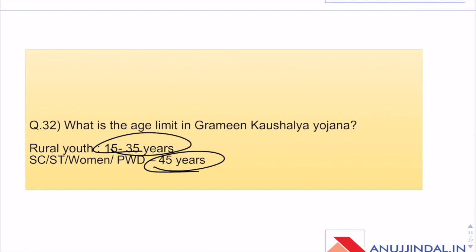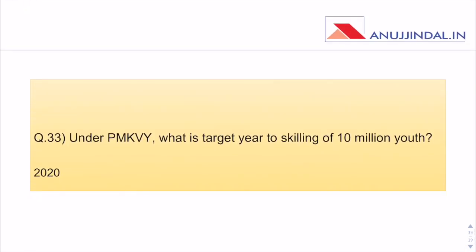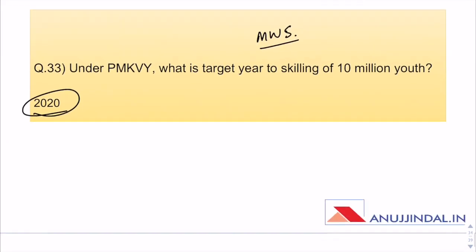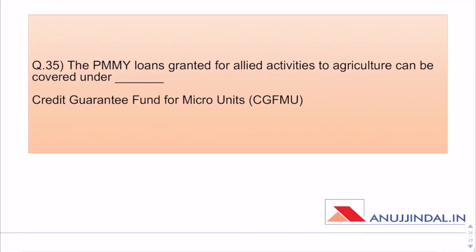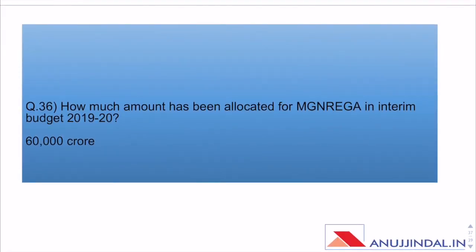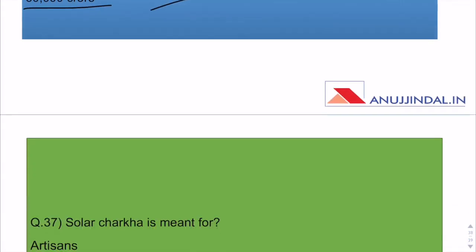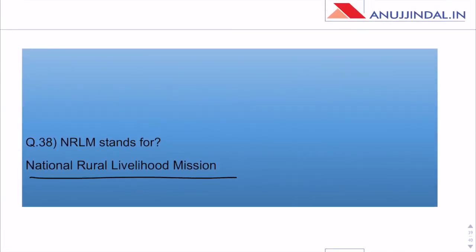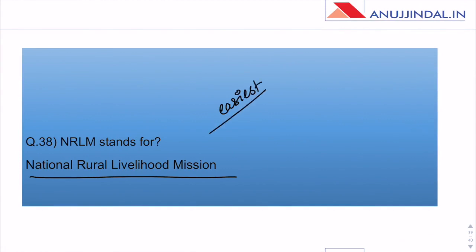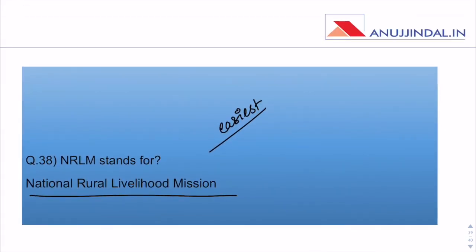What is the age limit in Pradhan Mantri Grameen Kaushalya Yojana? 15 to 35 and 45 — covered. PM KVY target year for skilling 10 million youth: 2020. KVY comes under the Ministry of Skill Development and Entrepreneurship. Mudra Yojana loans granted for allied activities to agriculture — covered under the Mudra PDF. How much has been allocated for MG NAREGA in the Interim Budget — covered. Solar Charkha scheme is meant for artisans. NRLM stands for National Rural Livelihood Mission — probably the easiest question.